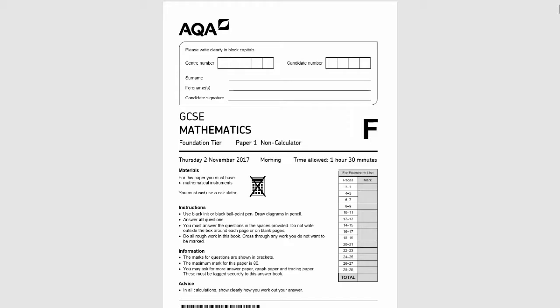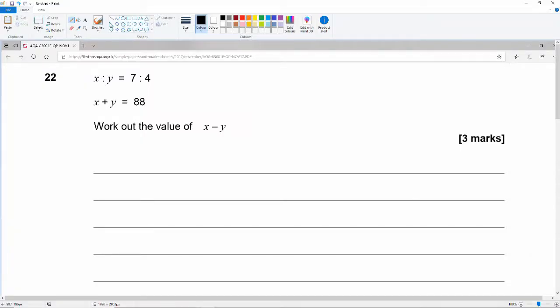It's a non-calculator paper and we're picking up in question 22 which reads: the ratio of x to y is 7 to 4, so x plus y is equal to 88. Work out the value of x minus y.